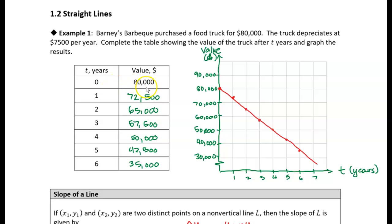So that's one point on the line. Now we also have these other points that we calculated just by subtracting $7,500 from the value every year. So if we want to use the point-slope form of a line, we just need a point and the slope.